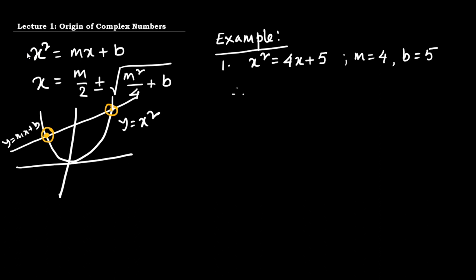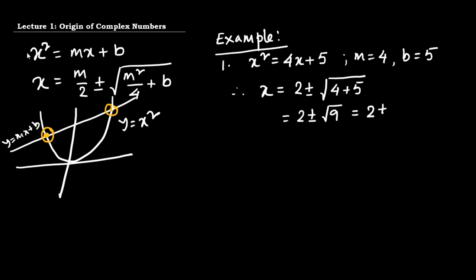By plugging in the values m = 4 and b = 5 into the formula, we get x = 4/2 ± √(4²/4 + 5), which is 2 ± √(4 + 5), that is 2 ± √9, so 2 ± 3. Therefore the solutions are x = 5 and x = −1. It's pretty simple — all of us can do it.